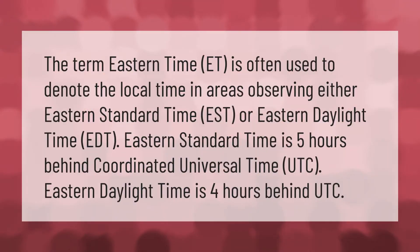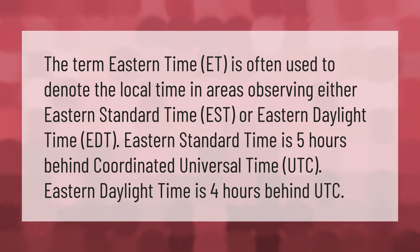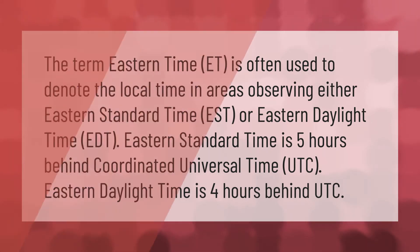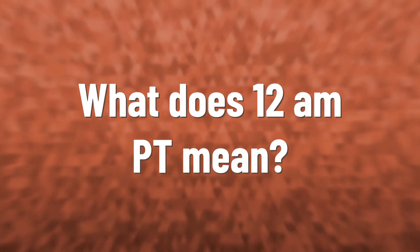The term Eastern Time, ET, is often used to denote the local time in areas observing either Eastern Standard Time, EST, or Eastern Daylight Time, EDT. Eastern Standard Time is five hours behind Coordinated Universal Time, UTC. Eastern Daylight Time is four hours behind UTC.